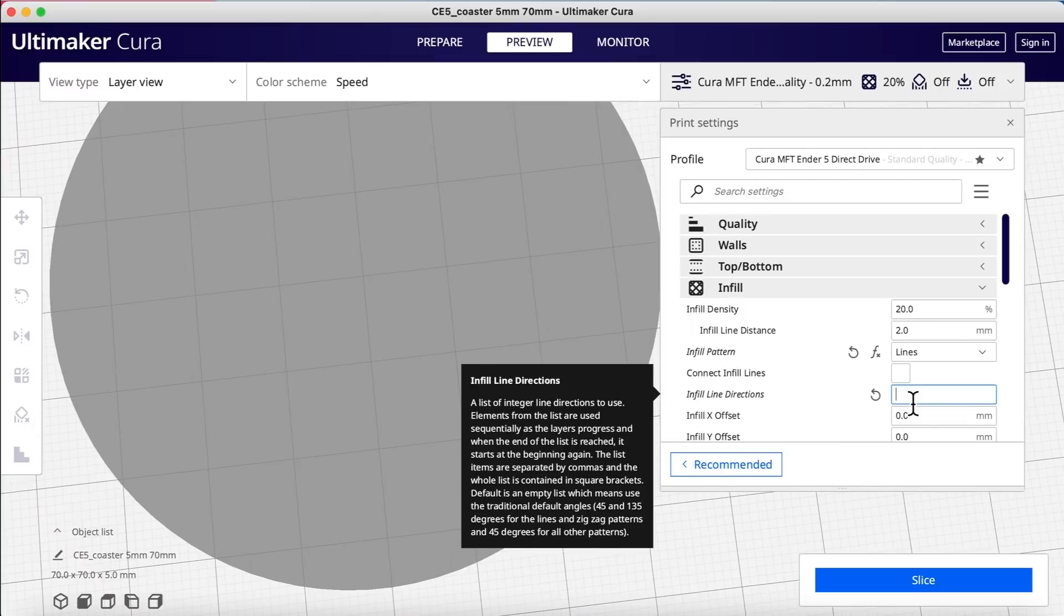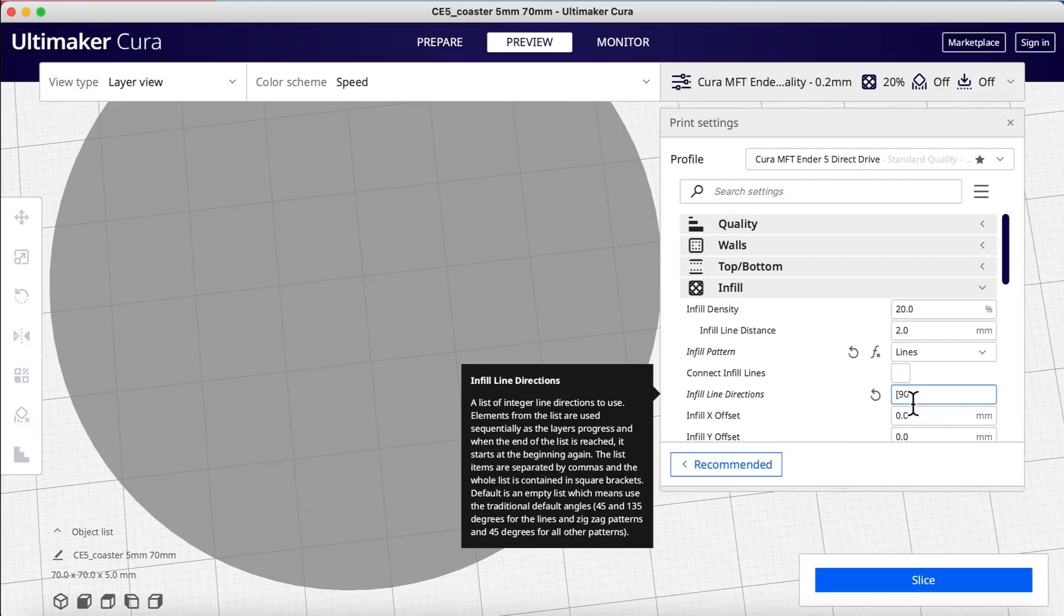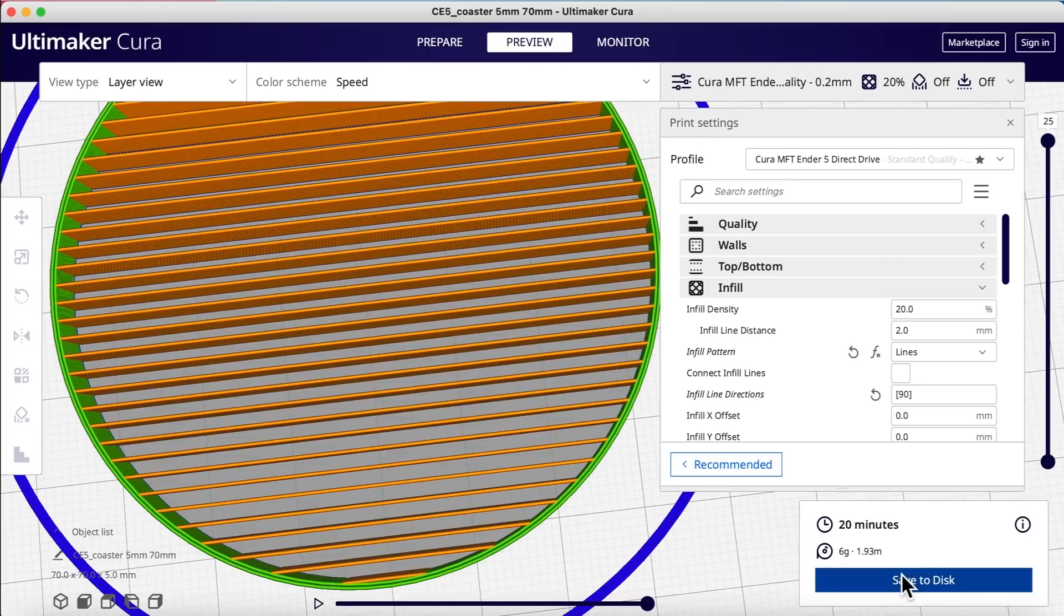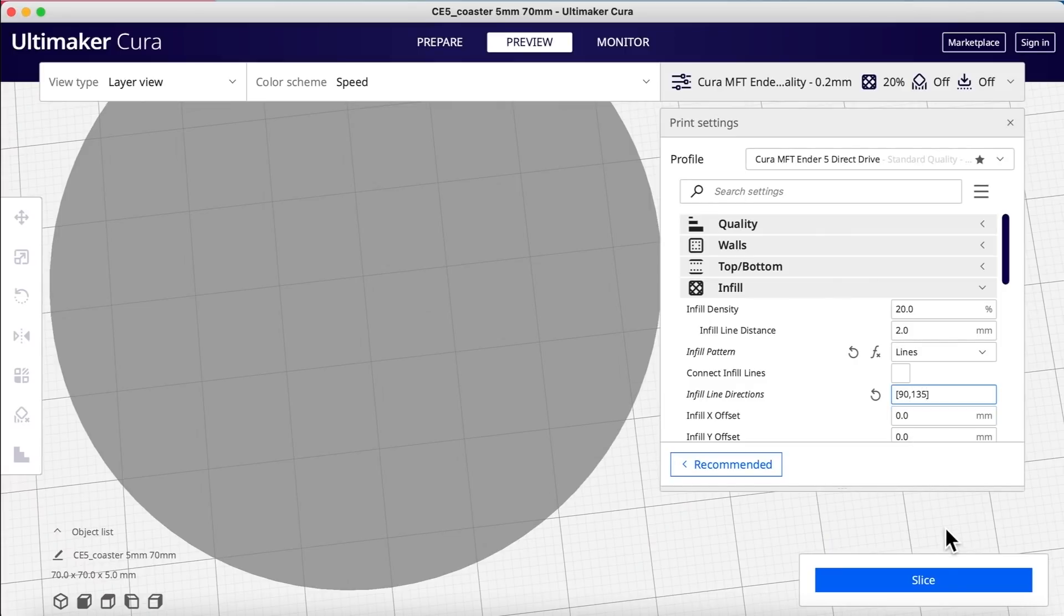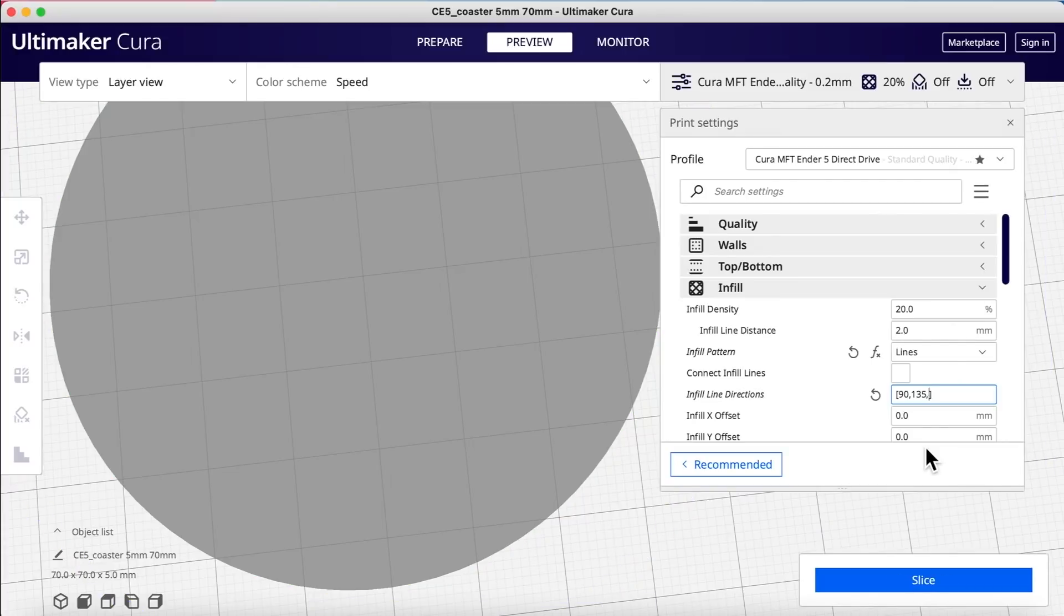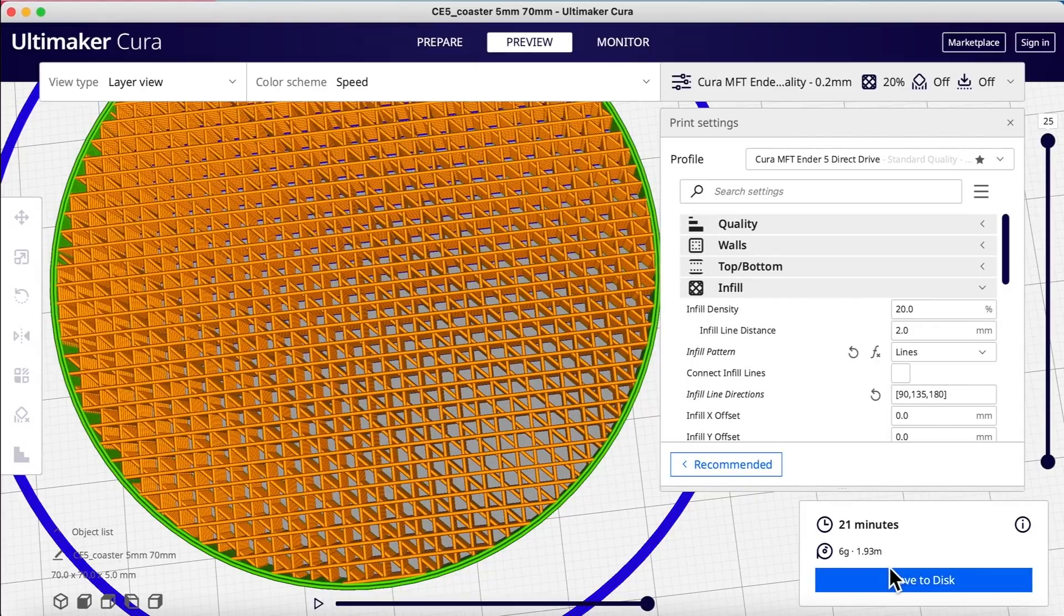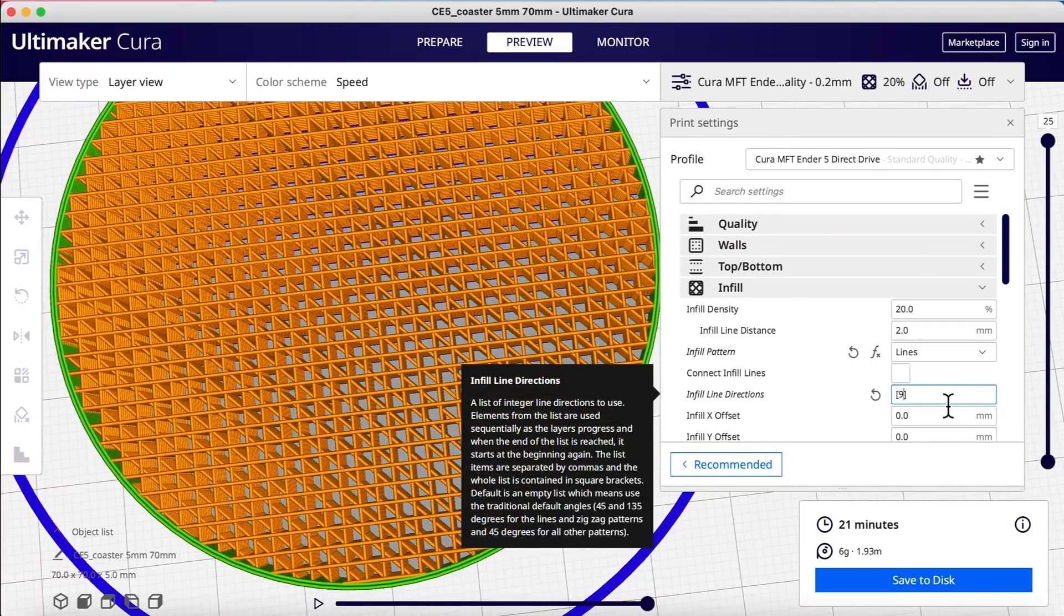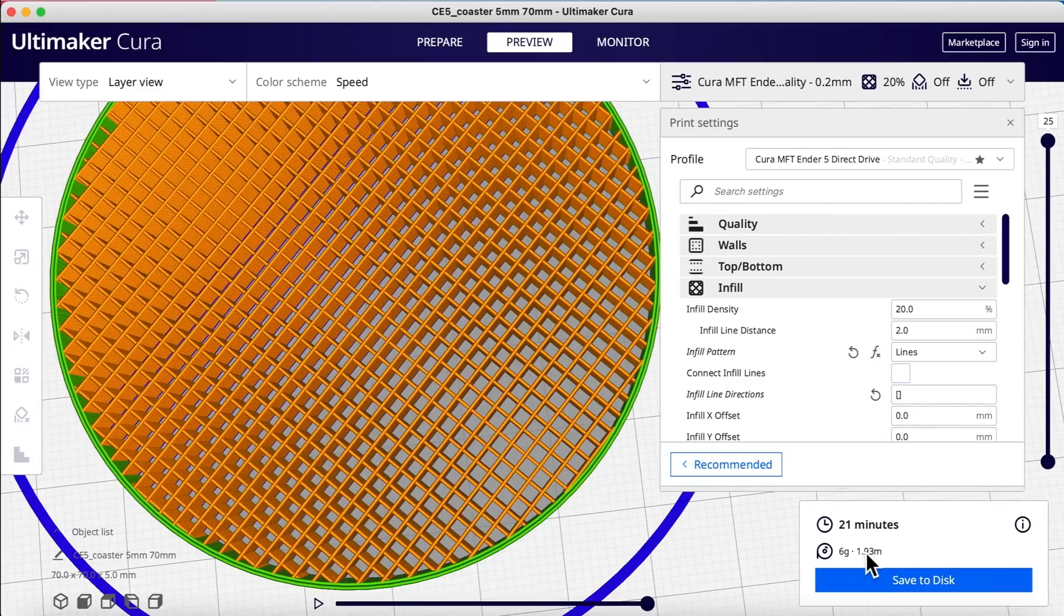But we can change that. And the way you change that is you go to this parameter here and you put in a list of directions. If I put in one direction, just 90 degrees, all of the lines will be in the same direction. If I put in 90 and then 135, we'll see that we form a grid. And I can even put in additional directions here to make that grid more complex. So if I'm using this for design, I have a lot of flexibility in how my infill will actually work. Now if I put it back to just open brackets like that, that's the default.